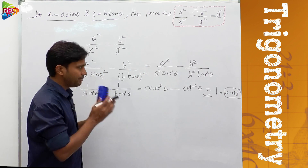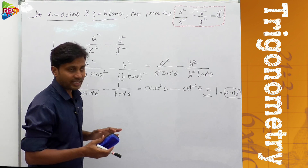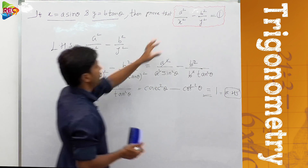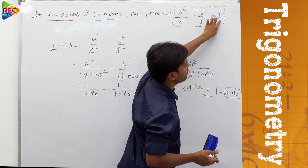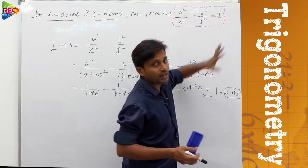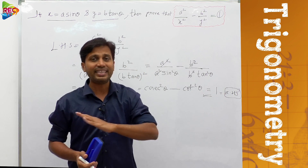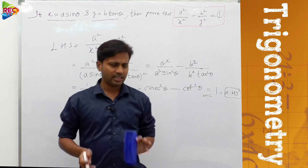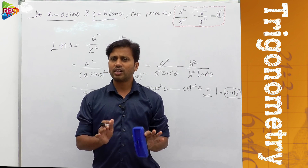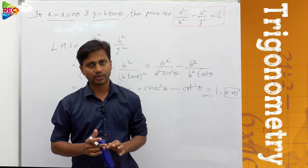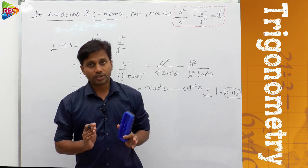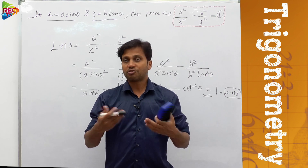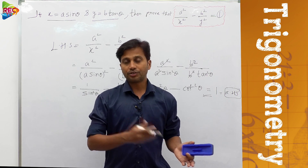We can call this model of problem 'eliminating θ'. The problem may also be stated as: eliminate θ from the given conditions. Elimination of θ is done because in a²/x² minus b²/y² = 1, there are no sin θ, cos θ, or tan θ — all trigonometric ratios are eliminated. We solve these using trigonometric identities — that is the important thing.